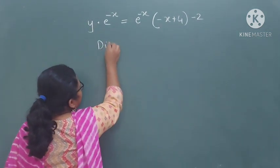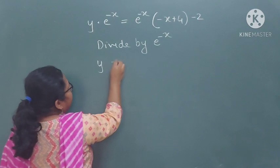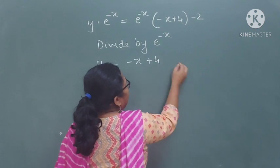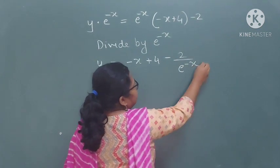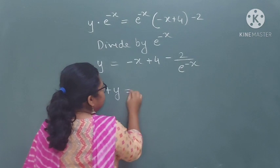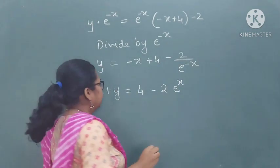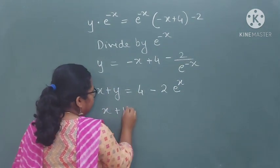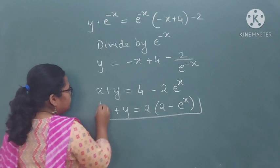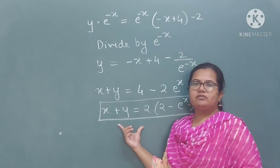Now substituting C equals minus 2: y into e raised to minus x equals e raised to minus x into (minus x plus 4) minus 2. We can simplify by dividing by e raised to minus x, so y equals minus x plus 4 minus 2 into e raised to x. Taking minus x to the other side: x plus y equals 4 minus 2 e raised to x. Or we can write: x plus y equals 2(2 minus e raised to x). This is the equation of the curve.